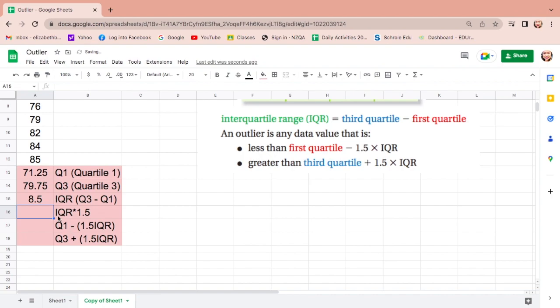Next, IQR times 1.5. Equals, IQR is 8.5, click, asterisk for multiplication, 1.5, enter.